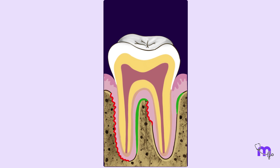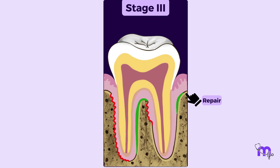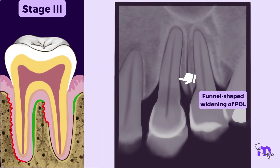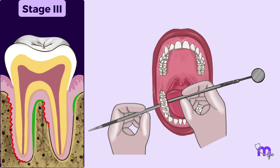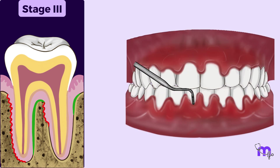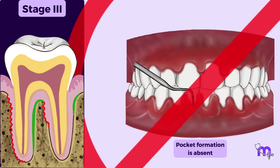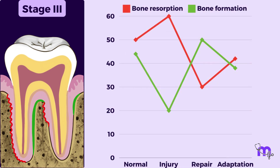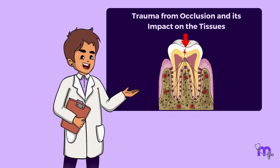Stage 3 occurs when the body's repair process is unable to compete with the destruction that took place. It results in funnel-shaped widening of the PDL, angular bone defects, and loose teeth. It is important to note that pocket formation is absent in cases of trauma from occlusion. Resorption and formation of bone return to normal after this stage.